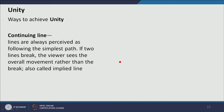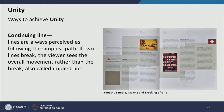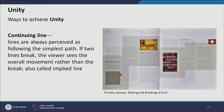Another way of achieving unity is continuity of line. Lines are always perceived as following the simplest path, so if two lines break the viewer sees the overall movement rather than the break. For example, the top edges of shapes in a row act as lines that break at certain points but are perceived as a united line — this is based on the principle of continuity. Similarly, because of photographs' alignment and text alignment we perceive a line, and a gray patch follows a line at the bottom of a photograph.